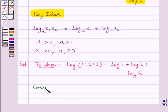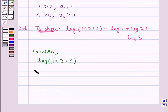Now, let's consider log(1+2+3). This equals log 6, and we can write 6 as 1 × 2 × 3.